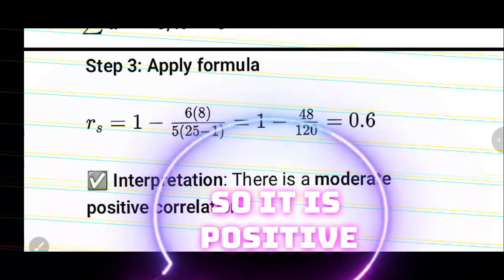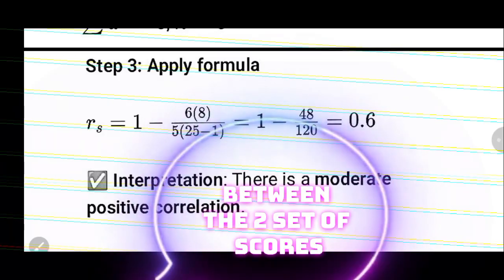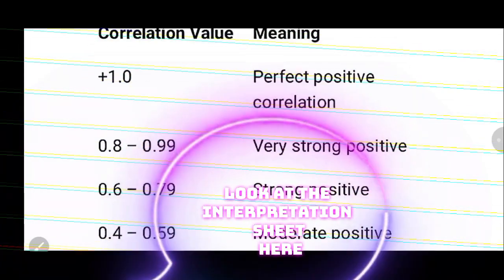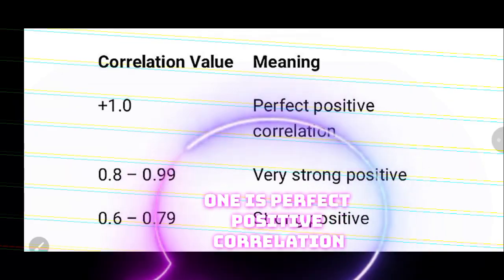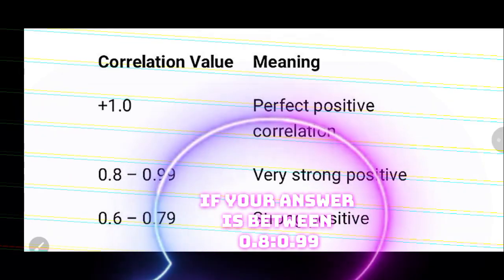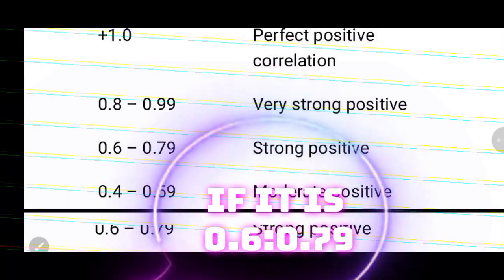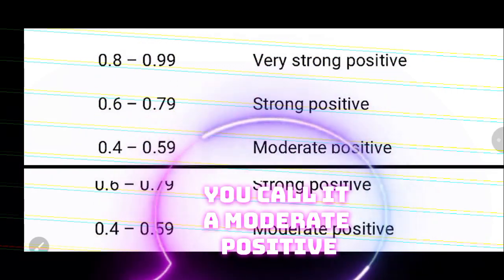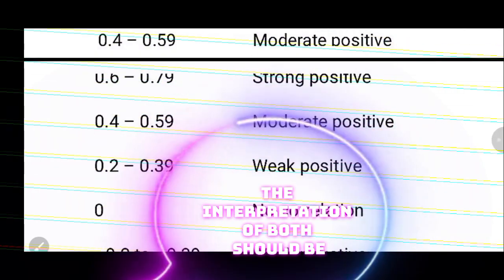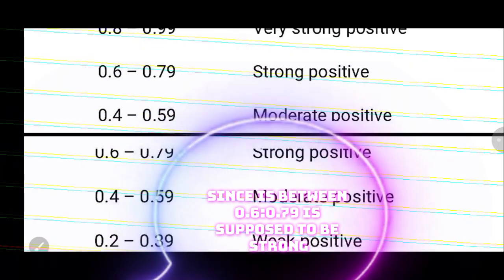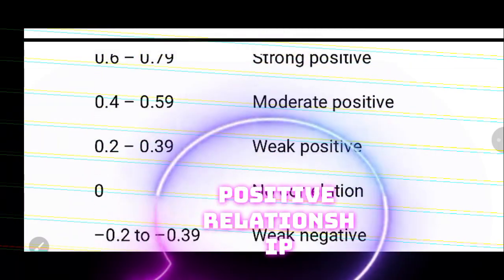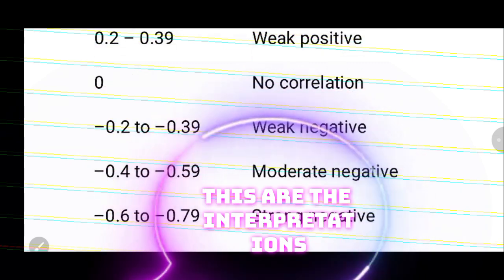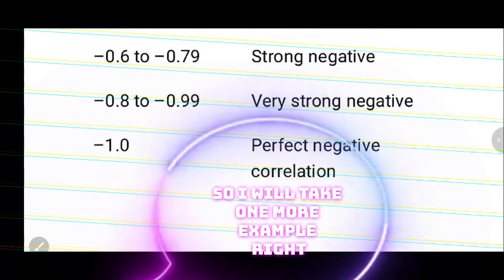The result is 0.6, which is positive, so there is a positive correlation between the two sets of scores. Looking at the interpretation sheet: if the answer is +1, it's a perfect positive correlation; 0.8 to 0.99 is very strong positive; 0.6 to 0.79 is strong positive; 0.4 to 0.59 is moderate positive. Since 0.6 falls between 0.6 and 0.79, this is a strong positive relationship. Zero means no correlation.